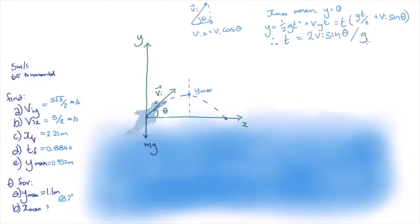Now we can put the time of flight t into our equation for x. We end up with x equals 2 times vi squared times cos theta times sin theta over g.